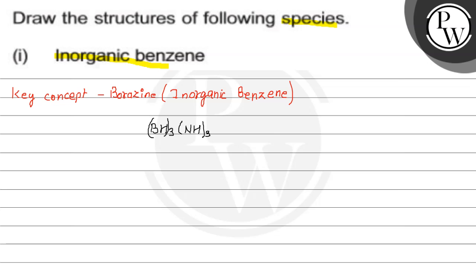The structure of borazine is a cyclic compound. It is a cyclic compound. Three BH units and three NH units are arranged in an alternate manner. So this is boron — B double bond N, double bond B, single bond B, and B double bond N.